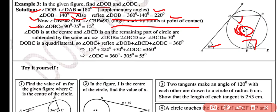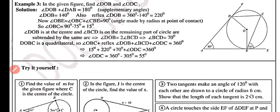CBE is given as 75 degrees, therefore OBC equals 15 degrees. Angle DOB is at the center, and BCD is on the remaining part of the circle, so angle BCD equals half of angle DOB — that is half of 140 degrees, which equals 70 degrees.